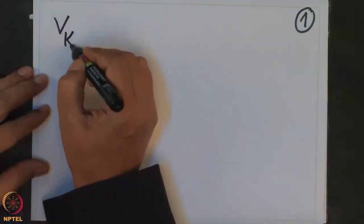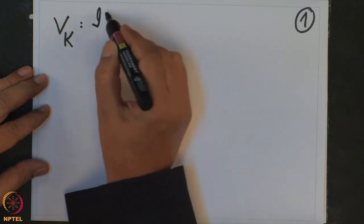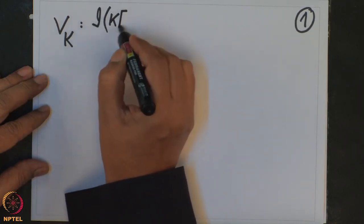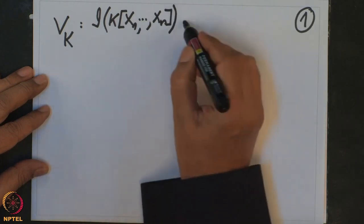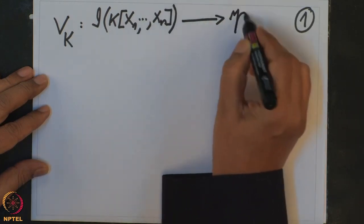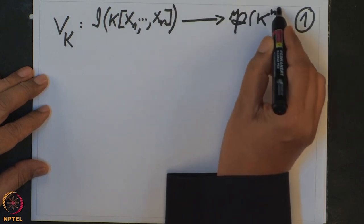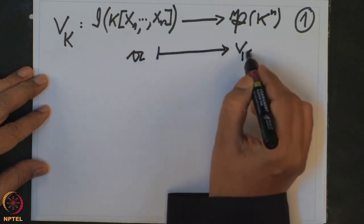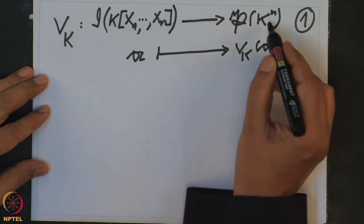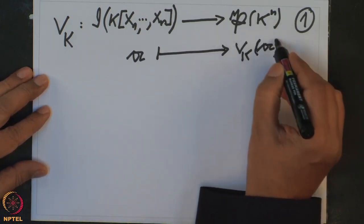Let us continue our study of K spectrum. I will briefly recall that we have defined a map VK from ideals in the polynomial ring K[X1, ..., Xn] to the power set of K^n. Any ideal A goes to VK of A, which is by definition all those points in K^n such that all polynomials in the ideal A vanish at that point.